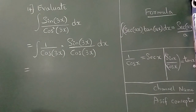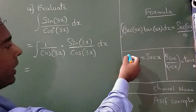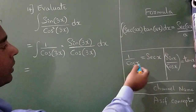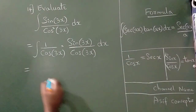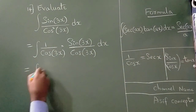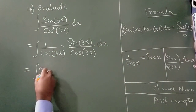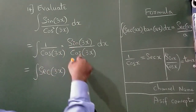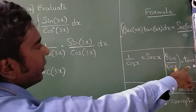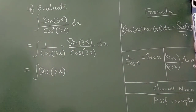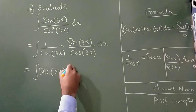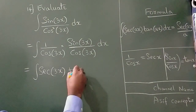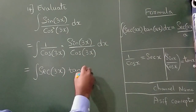According to the formula, 1 upon cos is secant, so I will write secant 3x. And sin divided by cos, according to the formula, is tan x, so I will write tan 3x here.